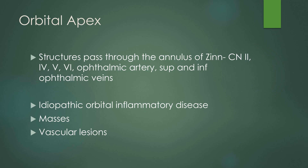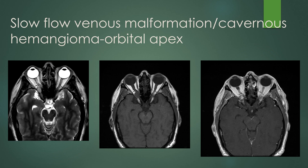Disease processes affecting this area include idiopathic orbital inflammatory disease, orbital apex masses, and vascular lesions. This case is a slow-flow venous malformation — previously known as a cavernous hemangioma — at the orbital apex. On axial T2, you see a well-circumscribed hyperintense T2 signal mass at the right orbital apex with mass effect on the optic nerve. On T1 pre-contrast it is iso-intense, and on post-contrast images there is heterogeneous enhancement. More delayed imaging shows these lesions tend to fill in, and you can see that mass effect on the optic nerve.